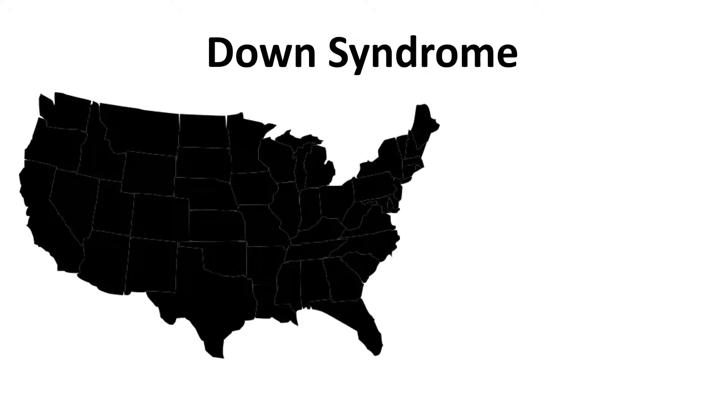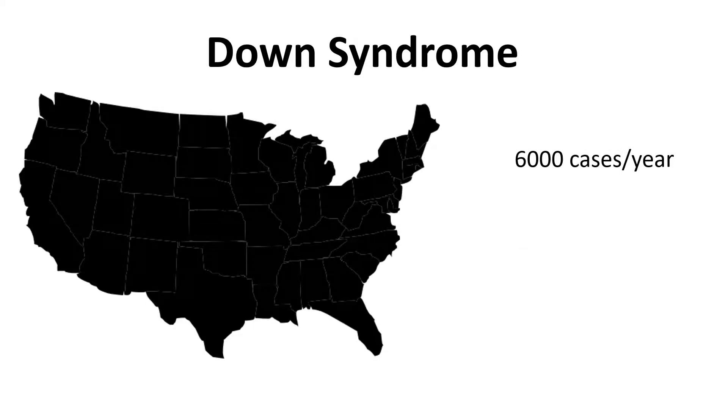In the US alone, about 6,000 babies are born with Down syndrome each year, which means one in every 700 babies born is affected by Down syndrome.